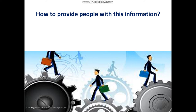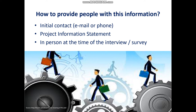How to provide people with this information: you can do initial contact via email or phone before you've got ethics approval, just to see whether people are interested in beginning the research. You can't ask them questions and use any of the information gathered in your research, but you can make that initial contact to see if they're interested in participating. Then you write a project information statement covering a lot of this information, and you can also go over that with them just before you start the interview or collect the data.